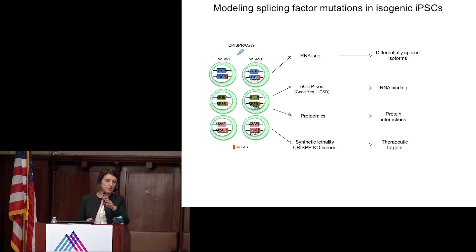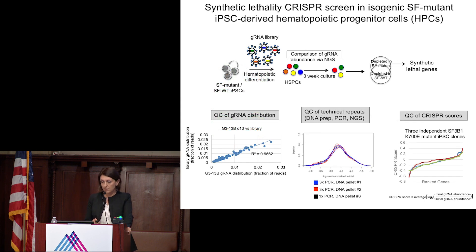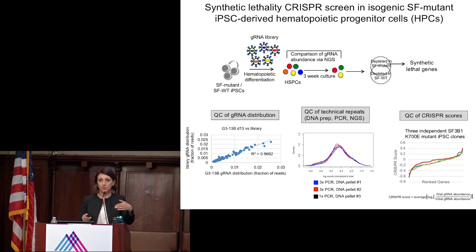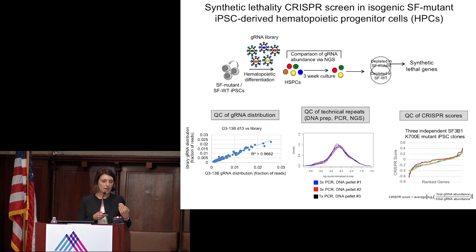Since the theme of the session is functional screens, I'm going to discuss how we use this for synthetic lethality CRISPR knockout screens. The idea is quite simple: we're using a dropout screen design whereby we transduce a library of guide RNAs that target a set of kinase genes — obtained from Brian Brown's lab — to each of these mutant and normal iPSC clones. Over time in culture, we use next-generation sequencing to ask what the abundance of each guide RNA is at the end of the culture compared to the beginning.